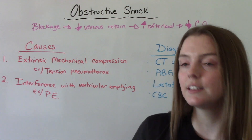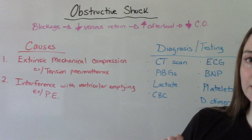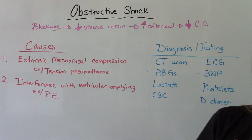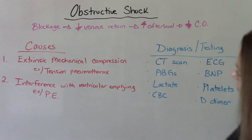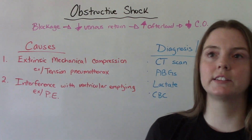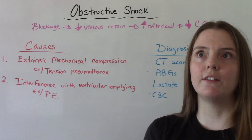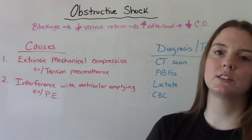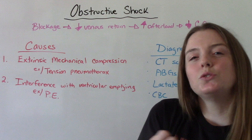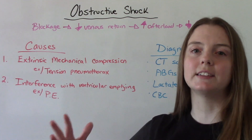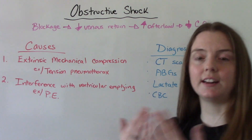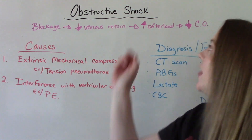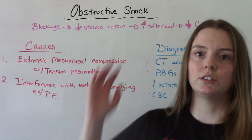There are two main causes. It could be either an extrinsic mechanical compression issue or an interference with ventricular emptying. The most common example for number one is a tension pneumothorax. Sometimes people who are on mechanical ventilators can have a tension pneumothorax, where they're holding on to a lot of air and they're not allowed to release it. Instead of being a two-way valve in and out, it gets trapped in that space, causes a lot of pressure to build up, and that in turn decreases the venous return to the heart.